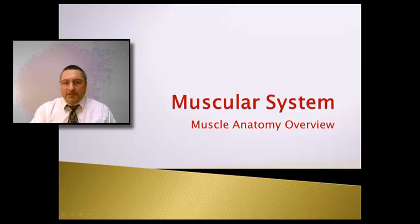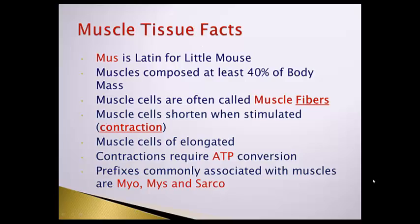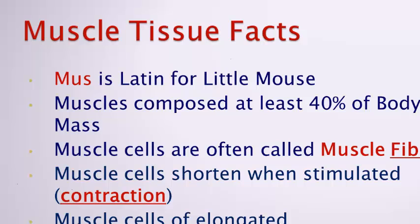A good place to start would be to take a look at where the word muscle came from. The word muscle comes from the Latin origin mus, which means little mouse. It refers to the appearance of little mice running under bed sheets — very similar to the appearance of the bicep contracting.